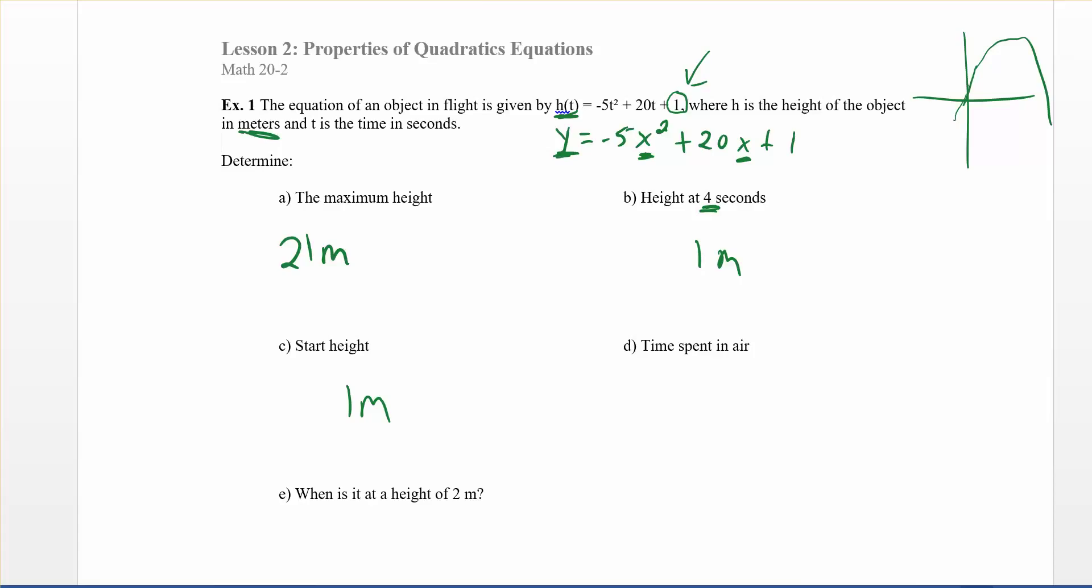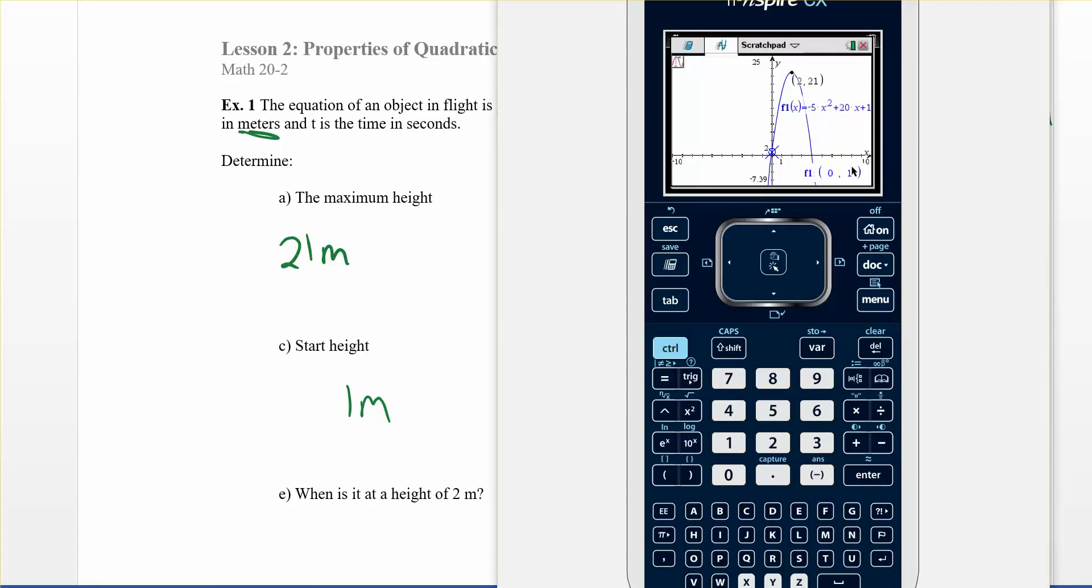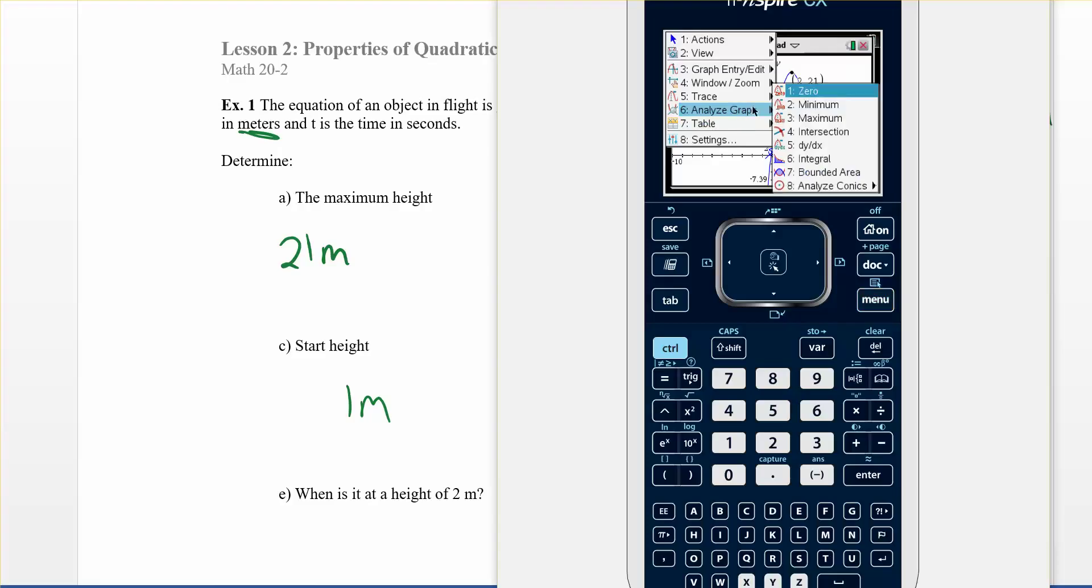Time spent in air. If we're looking at our graph again, time, remember, is the x-axis. So we're really seeing how far along the x-axis does it go. What we need to figure out is what is that point right where it crosses the x-axis. So to find that, we need to find what's called the zeros or the solutions. They go by many names. Let's push menu. It's under analyze graph as well. And then it's under zero. So push zero.